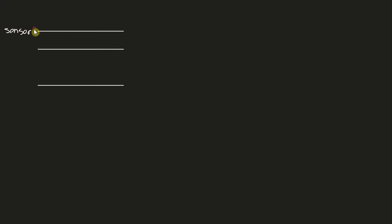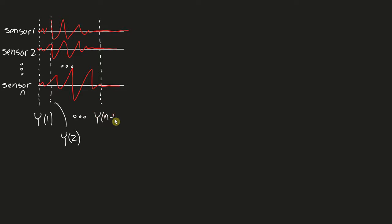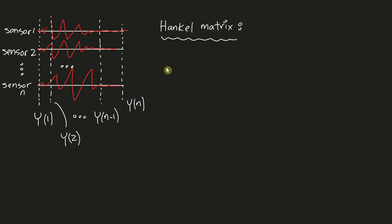For my dynamical system — let's say it's a bridge — I have a certain number of sensors, each one recording its own signal. These sensors are time-synchronized so they start and end at the same time. I'm going to take a cut through this section, which is a vector of all my sensor results at different time steps. I have y1, y2, and up to n many y's — that's the duration of my signals. I'm going to take these sensor results and assemble them into a Hankel matrix.